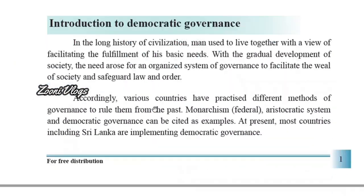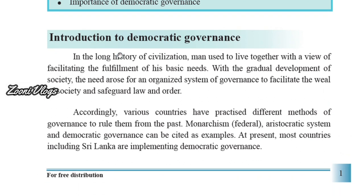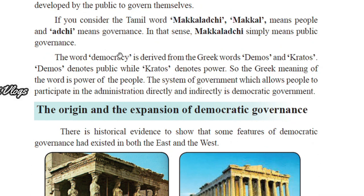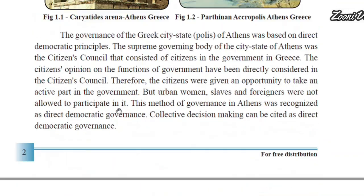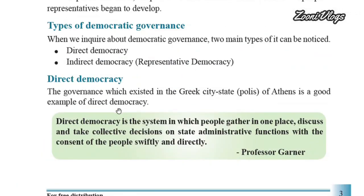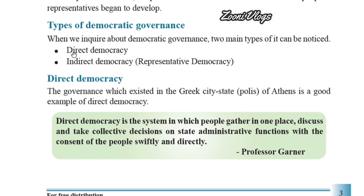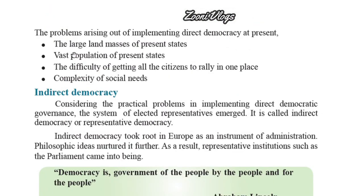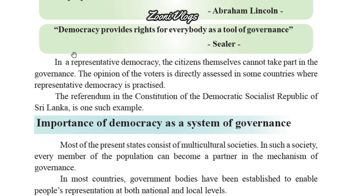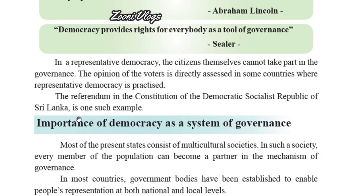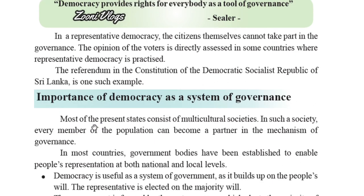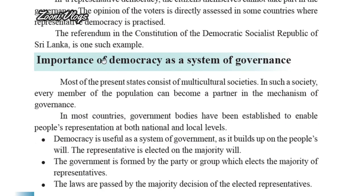We have now learned many things about democratic governance — the introduction to democratic governance, the origin and expansion of democratic governance, the Sapta Aparihani Dharma, and the types of democratic governance including direct democracy and indirect democracy. Next we will discuss the importance of democracy as a system of governance.